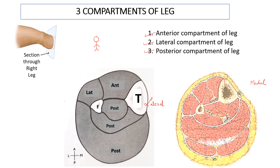A schematic diagram of the same section will look like this. Here you can see the different compartments of the leg — the anterior compartment, the lateral compartment, and the posterior compartment — with the different muscles arranged in different layers. Let's now see what the boundaries of the anterior compartment of the leg are and what these lines denote.